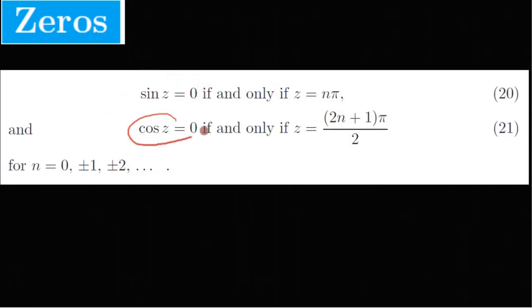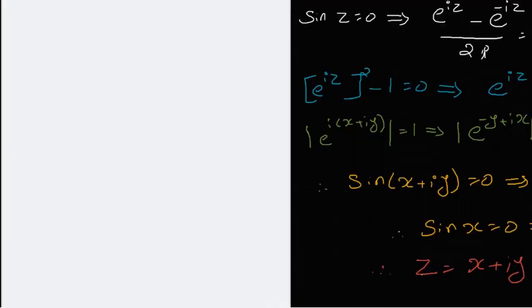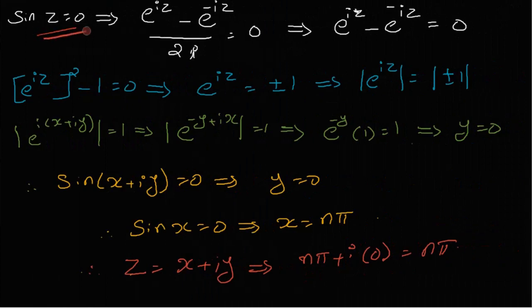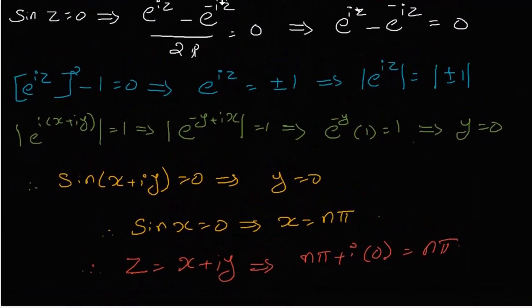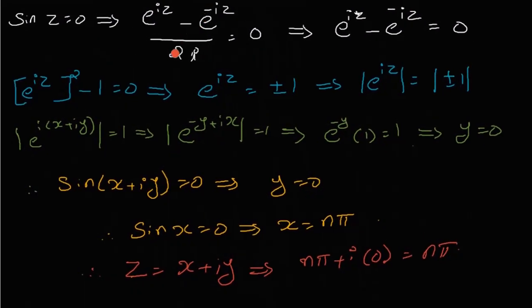If cos(z) is equal to zero, if and only if z is equal to (2n+1)π/2, then cos(z) = 0. Now if we have sin(z) equal to zero — sin(z) is equal to (e^(iz) minus e^(−iz)) divided by 2i.